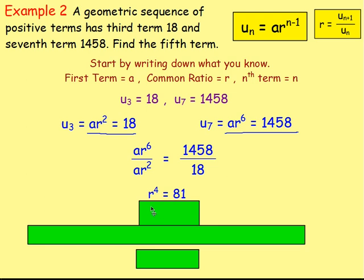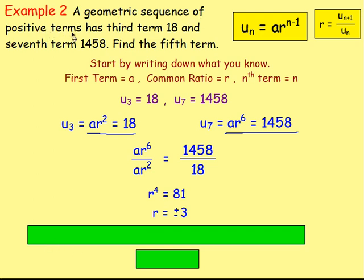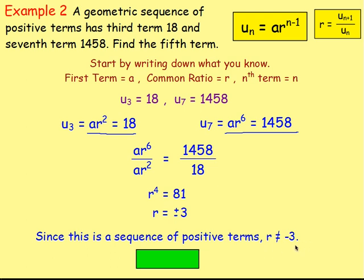If r to the power of 4 is 81, what's the value of r? It can be positive or negative 3. But because it says it's a geometric sequence of positive terms, you must be multiplying by a positive number each time. If you multiplied by negative 3, you'd alternate positive, negative, positive, negative. So r cannot be negative 3 — it has to be positive 3.